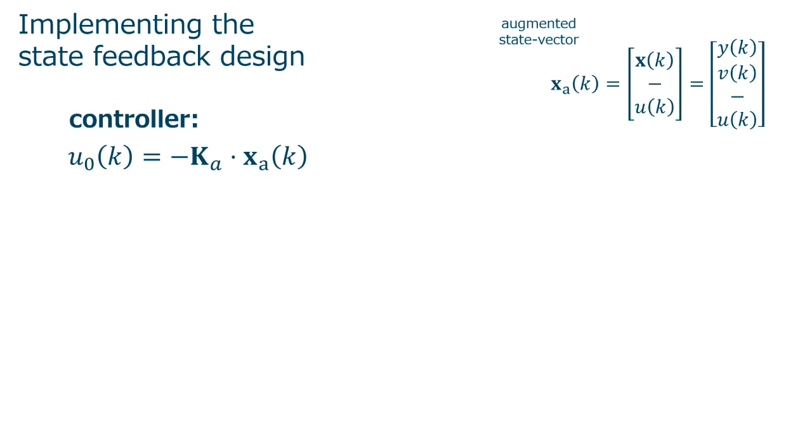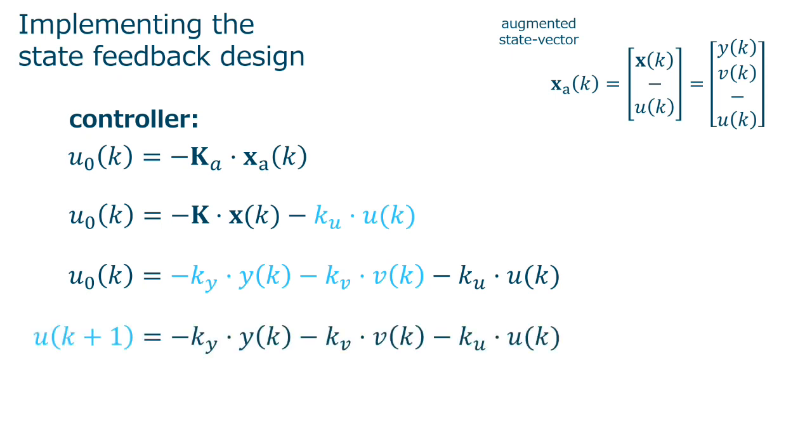After getting the feedback control gain vector KA, we can break it down to get an implementable controller. As in reality, the delay does not belong to the real plant. So we break KA into K and KU, then break K into KY and KV, and replace U0K by UK plus 1. Finally, we shift all terms one sample to get the control action UK, dependent on all terms in time K minus 1, as needed.